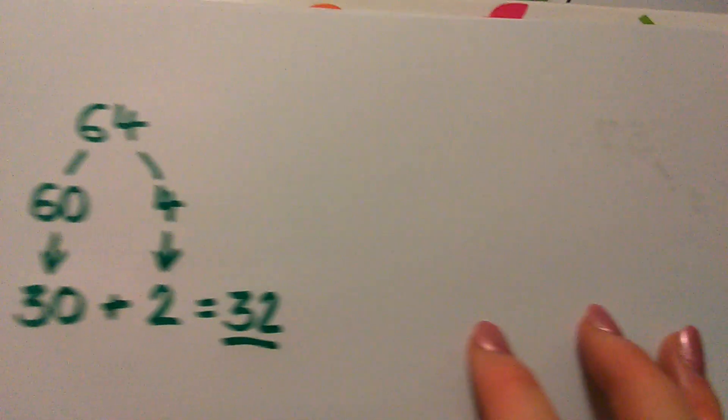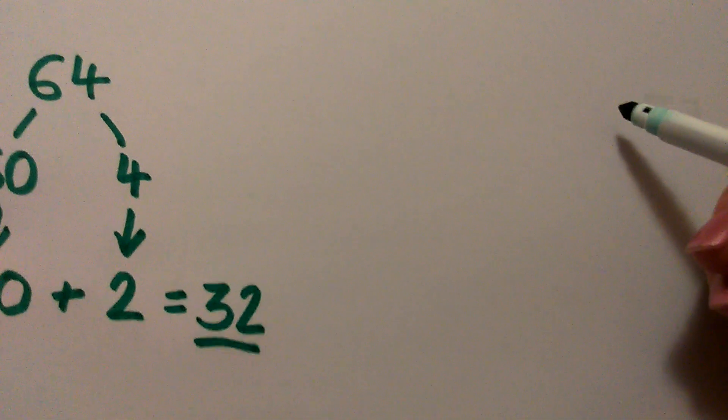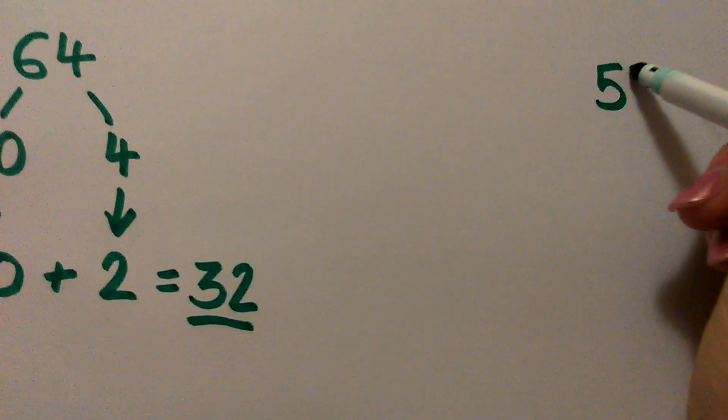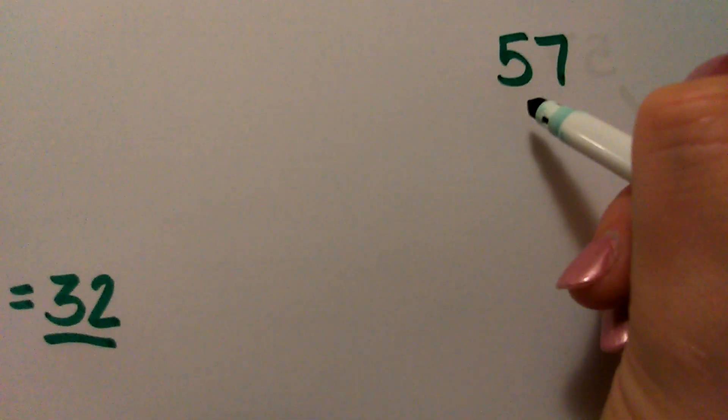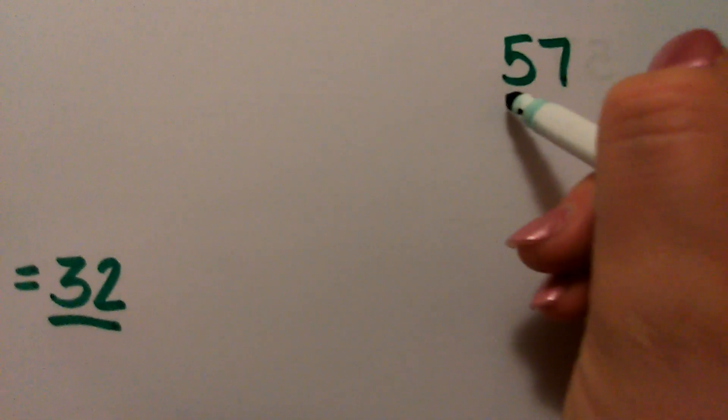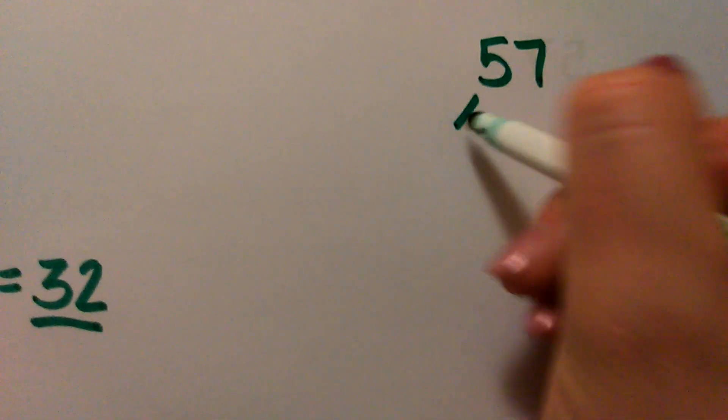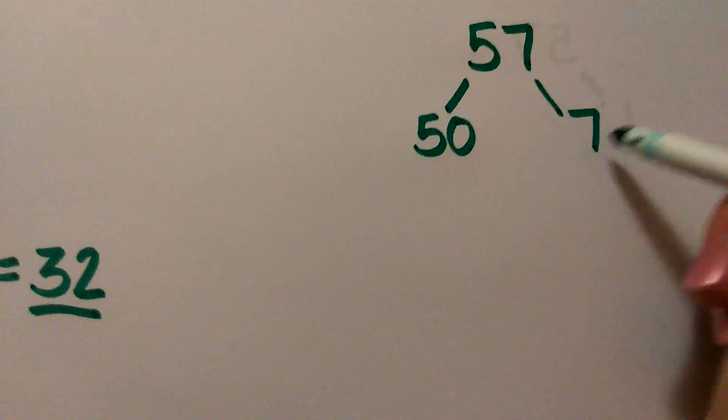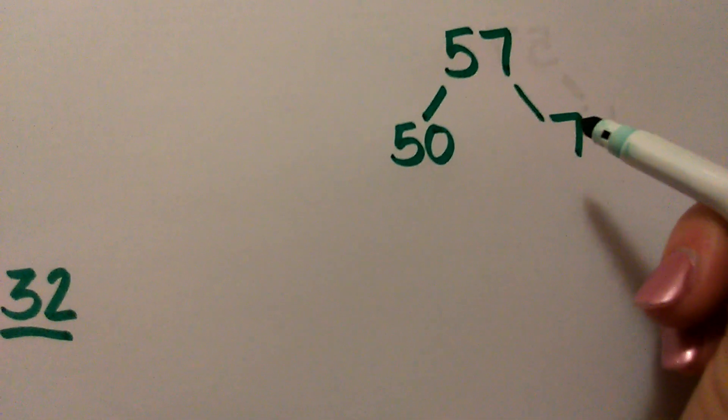Let's try another one now. But this time we're going to do it using an odd number. So let's take the number 57. Okay, so we're going to do the same thing again. We're going to partition it into the tens and the units. So 50 add 7 makes 57.